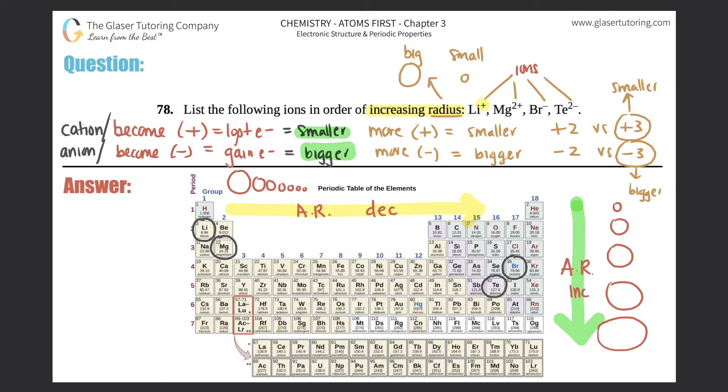They gave you a plus one for lithium, a plus two for magnesium, a minus one for bromine, and a minus two for tellurium. That's how we're going to rank these. We've got to rank them from increasing radius, so that means we should start off small, the smallest on the left-hand side, the largest on the right-hand side.